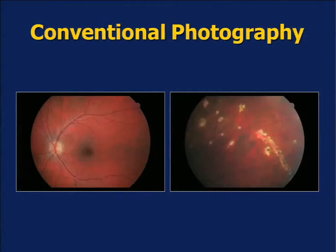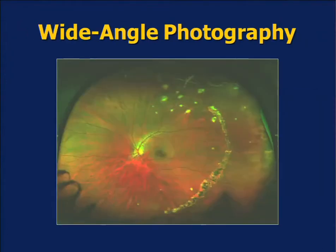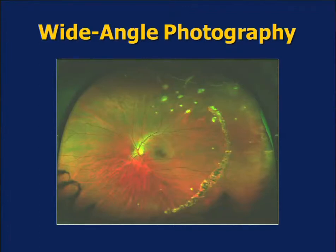Prior to about three or four years ago, many of us were using conventional photography where we were able to see the optic nerve, the macula, and some part of the periphery. But the question today is what does something like this picture — a patient with multifocal choroiditis — help us with, and what type of additional information does it provide? More importantly, does this information matter at all, or does it only look pretty and not be clinically relevant?